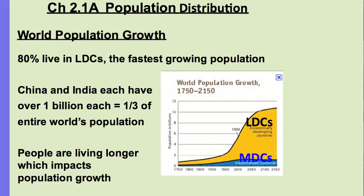Most of the world population growth has been happening in LDCs, where 80% of people live. That's the fastest growing. China and India each have over a billion people, which makes up one third of the entire world's population. With the fall in crude death rates, people are living longer and we see population growing very rapidly, and this drop in death rate will definitely impact population growth.